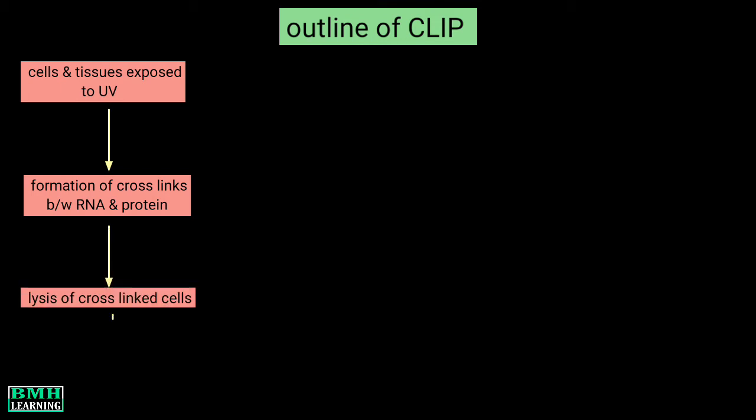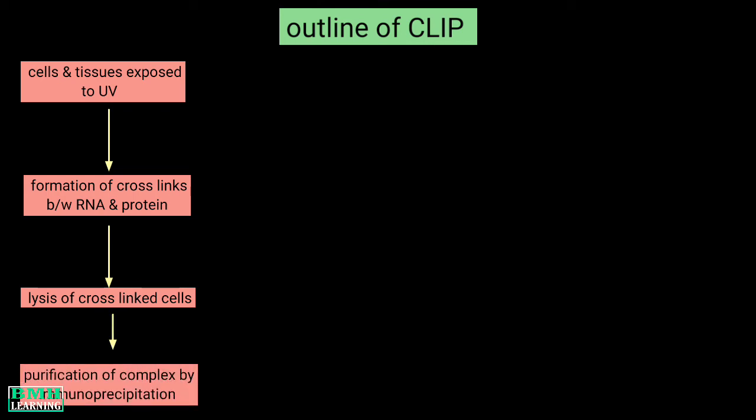We can draw an outline of CLIP. We know our cells and tissues are constantly exposed to ultraviolet radiation. As we discussed, the UV light would cause the formation of covalent bonds between RNA and RNA binding proteins. So what we will do is lyse the cells, and after the cross-linked cells are lysed, CLIP allows for a very stringent purification of the linked protein-RNA complexes with the help of immunoprecipitation.